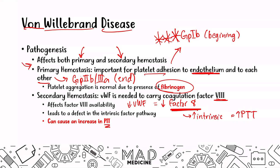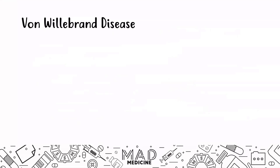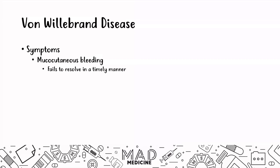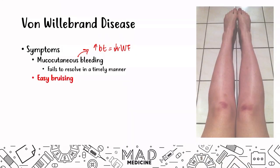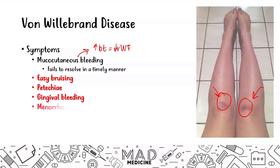That is how VWF plays an important role in both primary and secondary hemostasis. When it comes to symptoms, the most important is mucocutaneous bleeding that fails to resolve in a timely manner. If you see an increase in bleeding time with mucocutaneous bleeding, that is most likely due to VWF deficiency. You will also see easy bruising, ecchymosis, petechiae, gingival bleeding, menorrhagia, and recurrent epistaxis.